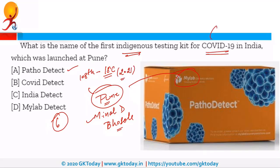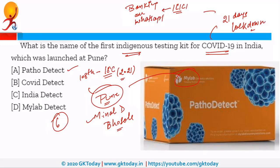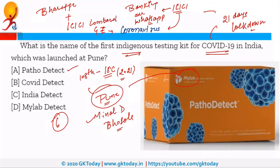To prevent the transmission of COVID-19, the Prime Minister announced a 21-day lockdown. Recently, ICICI Bank launched banking services on WhatsApp during this lockdown period. Apart from that, BharatPe has partnered with ICICI Lombard General Insurance to launch India's first coronavirus insurance cover, which is for merchants.